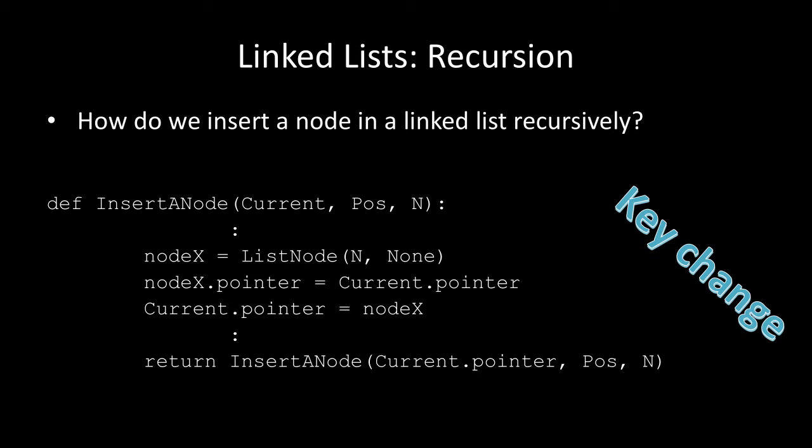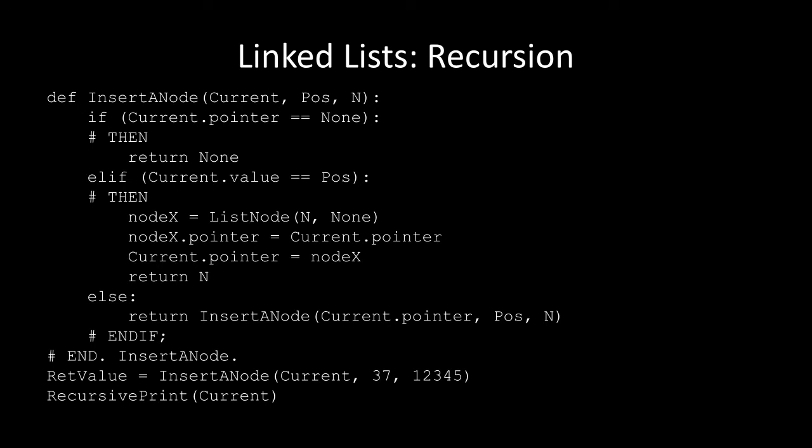If we want to insert a node into a linked list recursively, we need three things: the pointer current marking where we are, the position to insert the node, and the value to insert. When we reach the position we're looking for, we create a new node with the value and None, have the new node's pointer point to the next element of the list, and have the current value point to the new node — same as before. We're recalling insert_node until we find the position, moving one element on in the list each time.